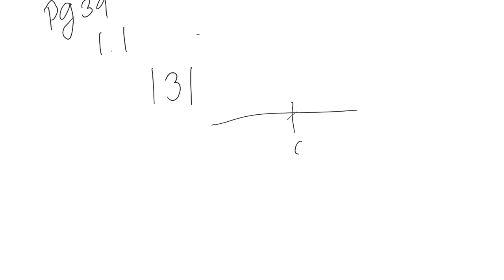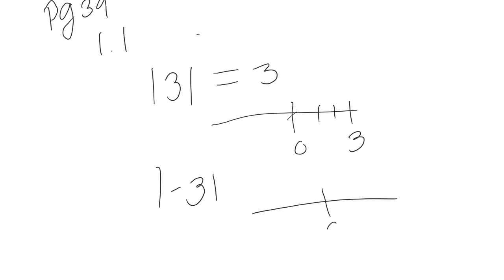So first thing is absolute value. Absolute value is when you have these little bars. The absolute value is how far a number is from zero. On a number line, three is three spaces from zero, so the absolute value of three is three. The absolute value of negative three is also three — it's still three spaces from zero. So absolute value is always positive.